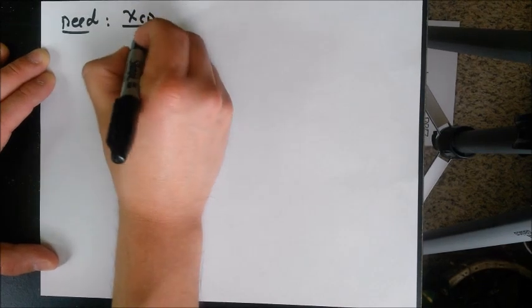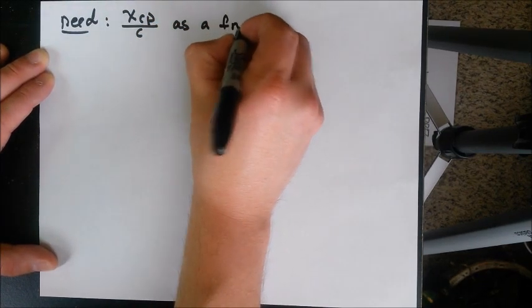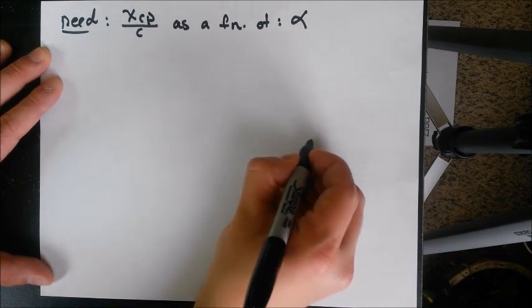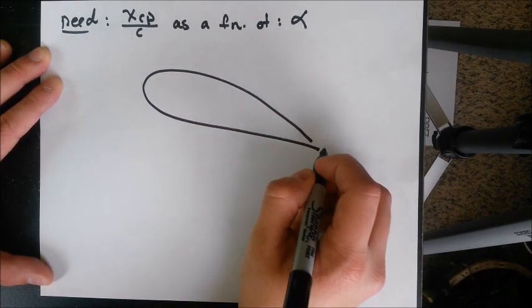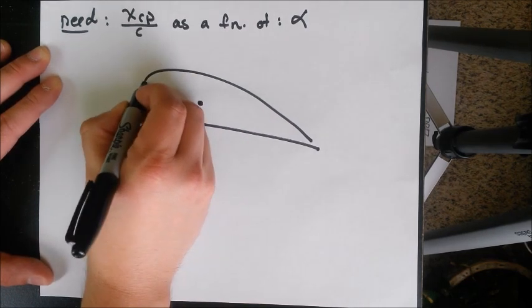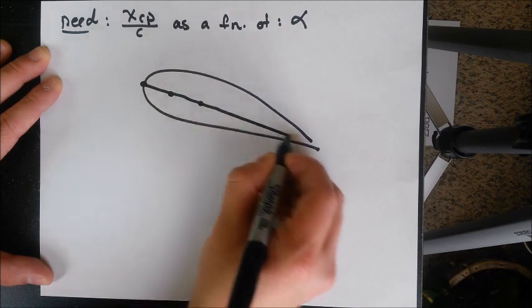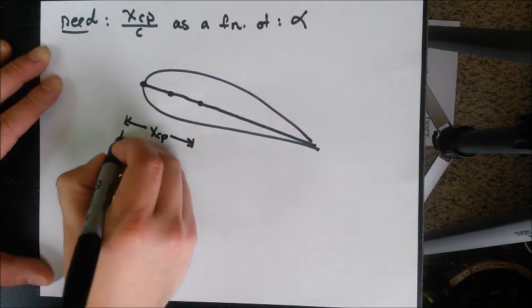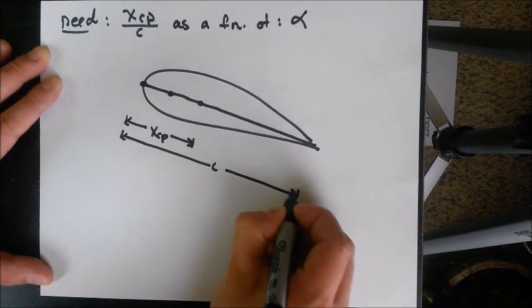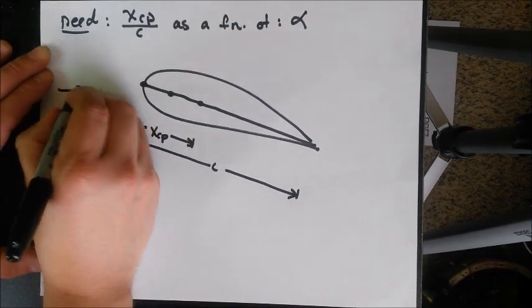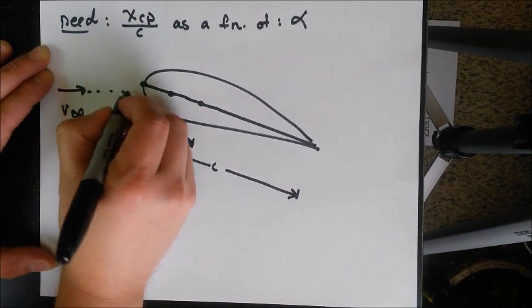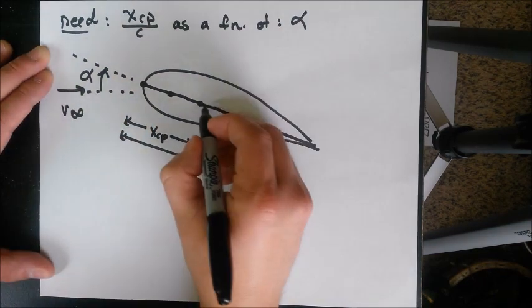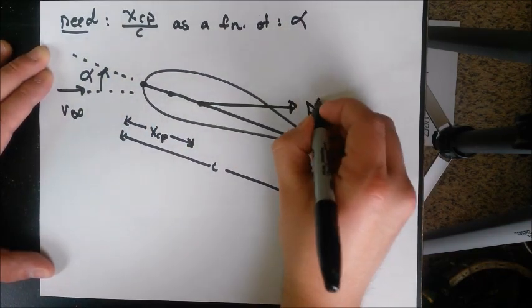We need the distance of the center of pressure, Xcp over C, which is chord, as a function of alpha, which is angle of attack. When you divide any unit by unit, it's one. So Xcp over C is actually a non-dimensionalized unit, which makes it easier to work with.